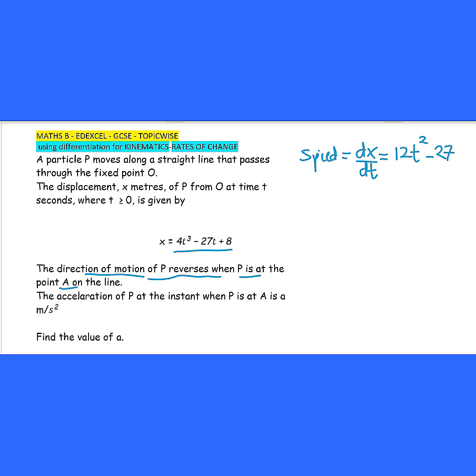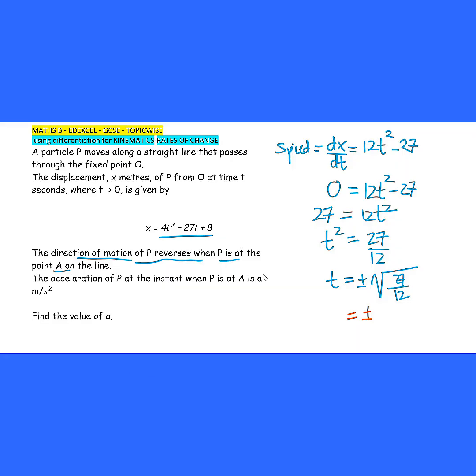So this one changes the direction, it means it has to pass 0 then from positive 0 then negative. So we set this equals to 0. So it's 12t² minus 27. So we set 27 equals to 12t² and then t² will be equal to 27 divided by 12 and t will be plus minus square root of 27 divided by 12.